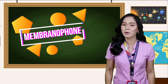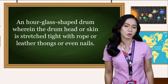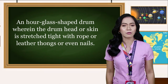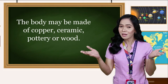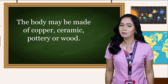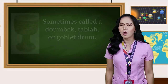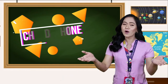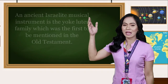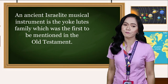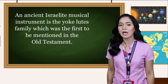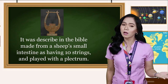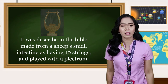With regards to their membranophones, there is an hourglass-shaped drum wherein the drum head or skin is stretched tight with rope, leather thongs, or even nails. The body may be made of copper, ceramic, pottery, or wood — sometimes called a dombek, tabla, or goblet drum. As to their chordophone instrument, an ancient Israelite musical instrument from the Yoch-Lutz family was the first to be mentioned in the Old Testament. It was described in the Bible as made from sheep small intestine, having ten strings and played with a plectrum.